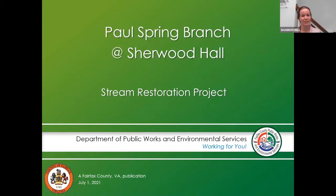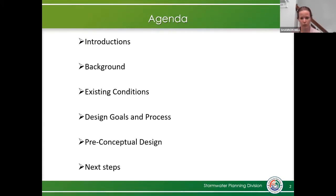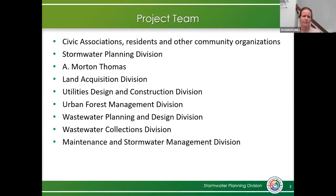Here is our presentation. This is for the Paul Spring Branch of Sherwood Hall — we're doing a stream restoration here. We're going to do introductions, then a quick background on the stormwater planning program and why we do what we're doing. Then we'll talk about existing site conditions, our design goals and process, our pre-conceptual design, and then next steps. The project team includes the Civic Association, residents, and other community organizations around the area. We really appreciate everybody's input and I'm glad you were all able to come to this meeting today.